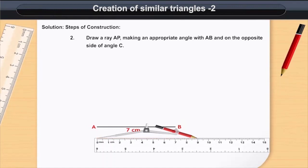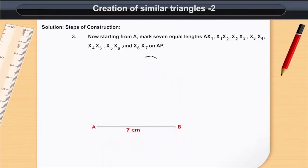Draw a ray AP making an appropriate angle with AB and on the opposite side of the angle C. Now, starting from A,